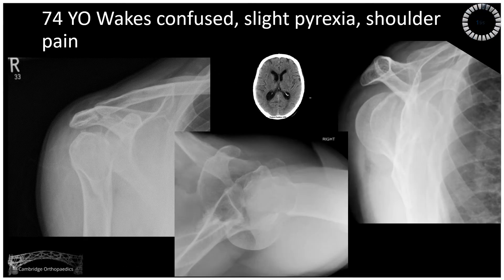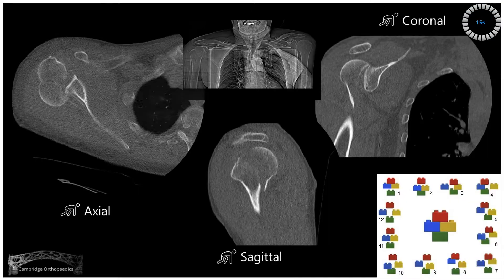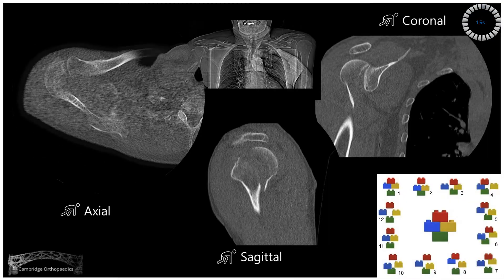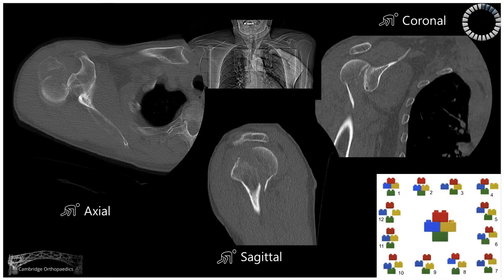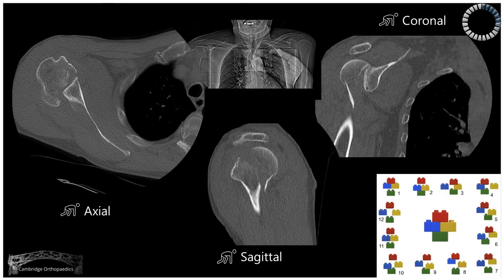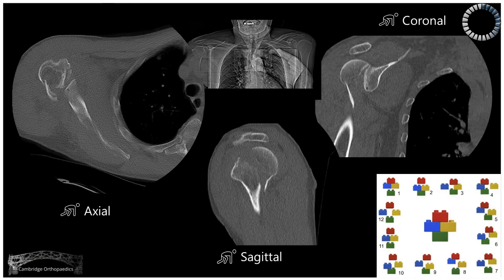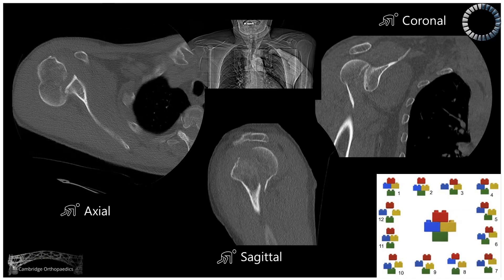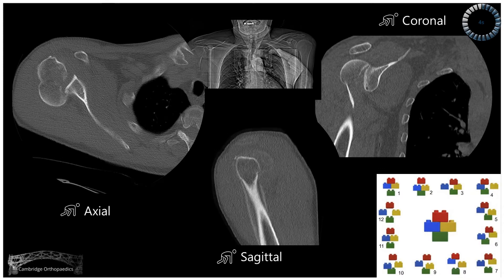Our next patient is a 74-year-old who wakes confused, slightly pyrexial, and presents with shoulder pain. Here are the axial, sagittal, and coronal CT scans. Characterize the fracture or classify according to Neer and consider Hertel's Legobrick classification.